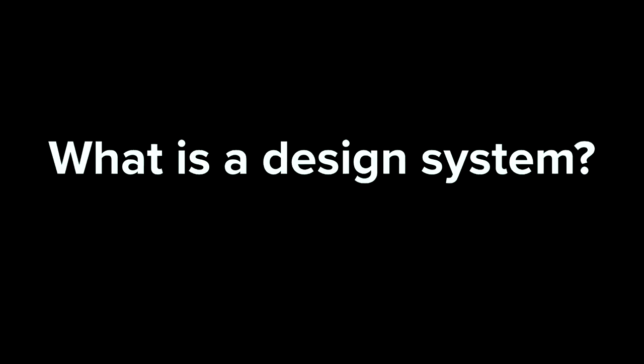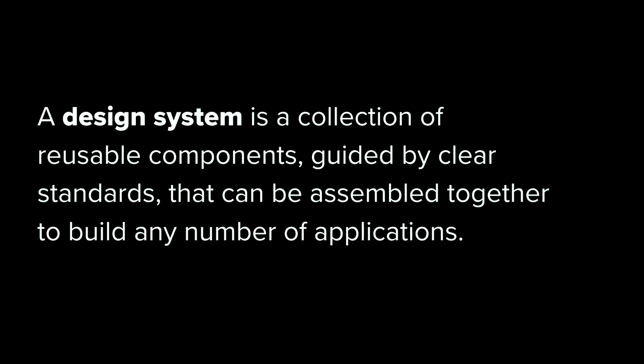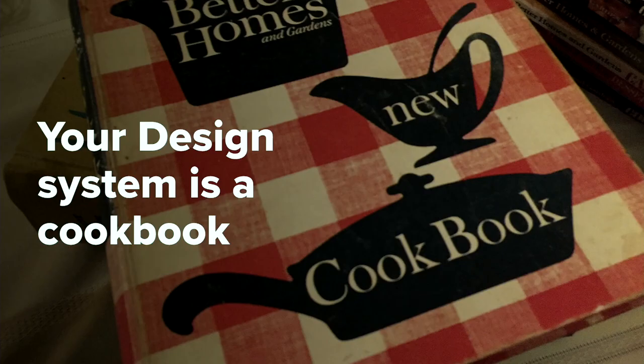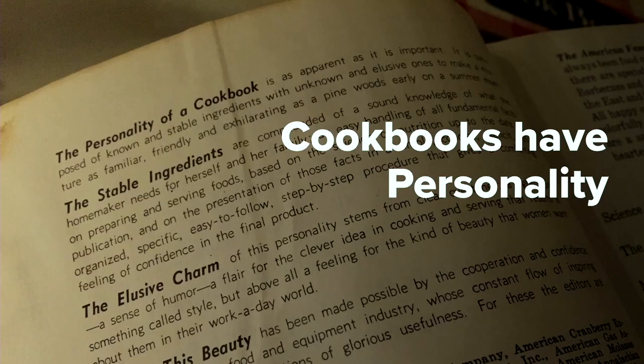Imagine if you had accessibility baked into some commonly used components in your design system — wouldn't that be cool? So what is a design system? Paraphrasing a quote from InVision: a design system is a collection of reusable components guided by clear standards that can be assembled together to build any number of applications. I like to say your design system is a cookbook, and cookbooks have a personality.